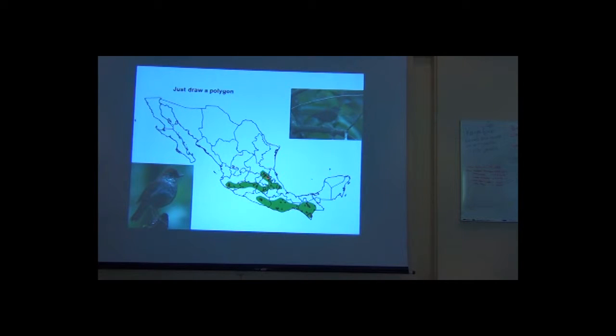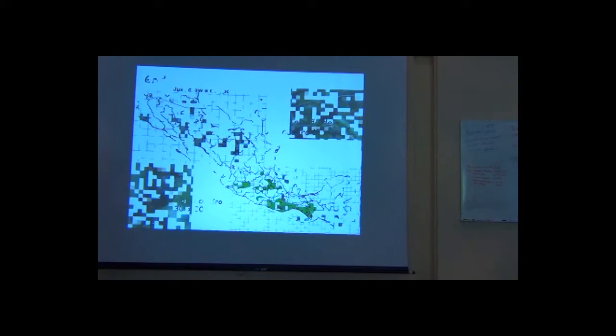This is a method that we call elevated hands, that is a manual method that is just draw a polygon around the distributional data point to make an estimate of the distributional area of the species. There are many methods that you can use. But essentially this is the kind of maps we have been doing in the very traditional faunistic surveys of many taxa.